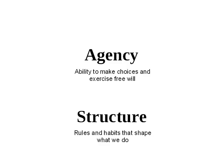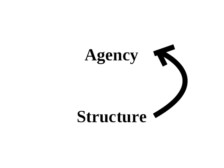Culture is made up of agency and structure. Agency is the ability of people to make choices and exercise free will. In the baseball example, it's your ability to decide how to swing the bat, how to run the bases, or where to throw the ball. Structure consists of the rules and habits that shape what we do — explicit rules like not being able to approach the pitcher's mound, and implicit habits and conventions about how the game is played. Structure shapes agency by telling you what options are available.